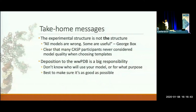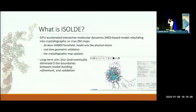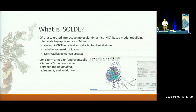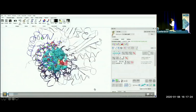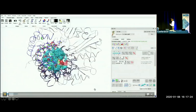After that preamble, let me talk about what Isolde is. The long-term aim — or possibly more of an aspiration — is to blur and ultimately eliminate the line between model building, model refinement, and validation. It's my perspective that ultimately these should become parallel processes, all happening at once — you're building the model, it's refining and validating as you go.